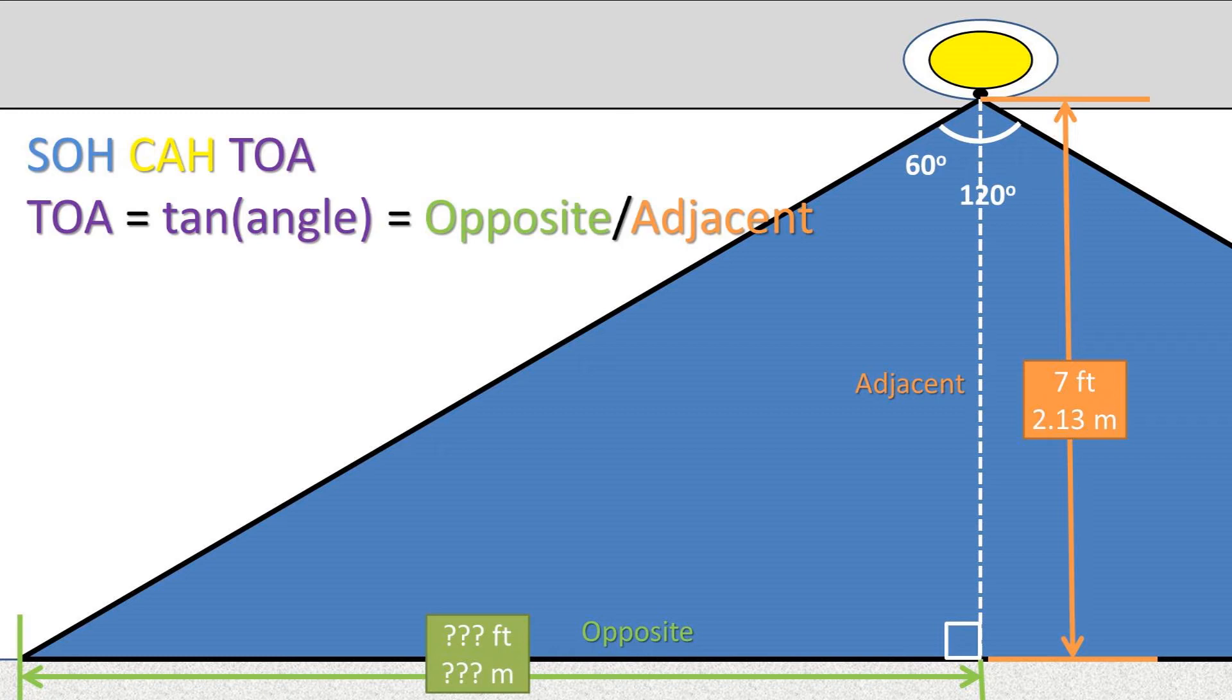This formula states that for a given angle, the ratio of the side length opposite over the side length adjacent will always be the same for a right triangle, assuming the same angle.